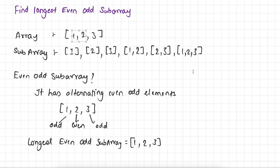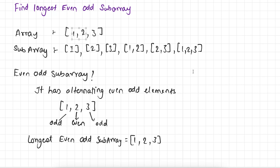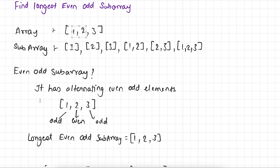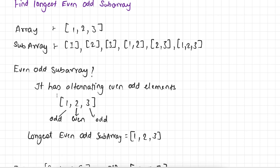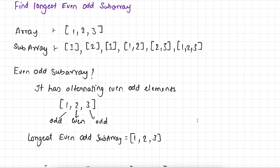Now the question arises: what is meant by an even-odd subarray? It is also a subarray but it has alternating even-odd elements. Here we have 1, 2, 3 — 1 is odd, 2 is even, and 3 is odd. So the longest even-odd subarray we get using this array is 1-2-3. Basically, the even-odd subarray means the array whose first element begins from an even number, then odd, then even, then odd — or begins from an odd number, then even, then odd, then even.